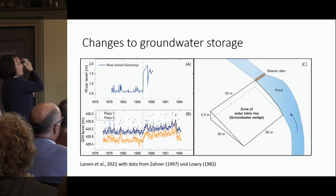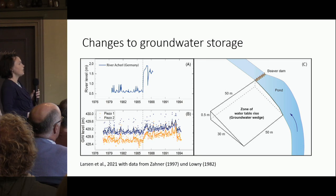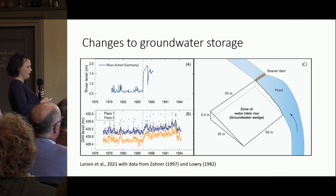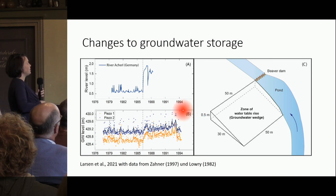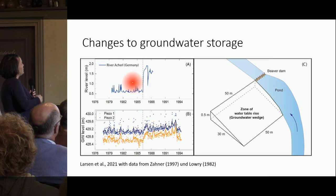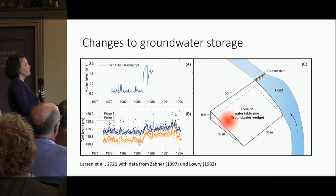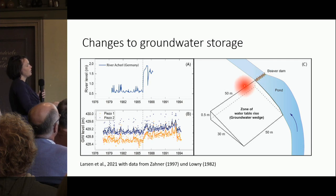We find a rise in the shallow groundwater table associated with beaver dams — this data is from Germany. This is the river level, that is the groundwater level; it rises around the beaver dam. And that is how conceptually the zone of shallow groundwater table rise along a beaver dam varies.